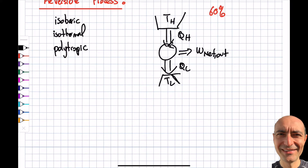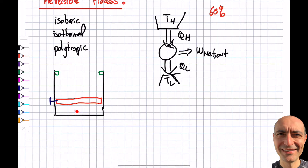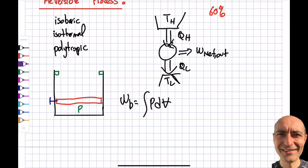What I just said doesn't exist in real life, as I mentioned. Let me give an example. Say I have a piston with a pin holding it, and high pressure inside. If I remove the pin, the high pressure will shoot the piston up and it will slam into the stops. That's called a fast expansion.